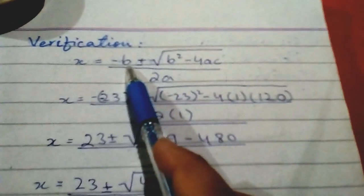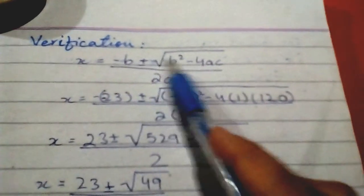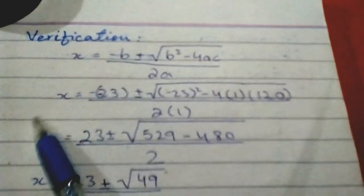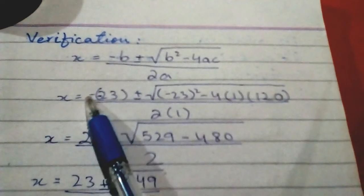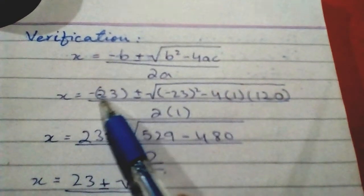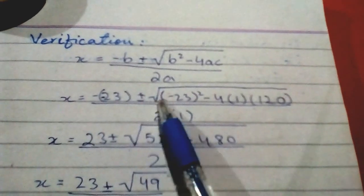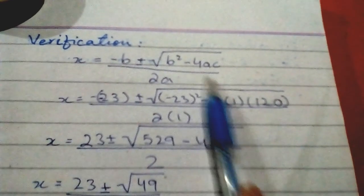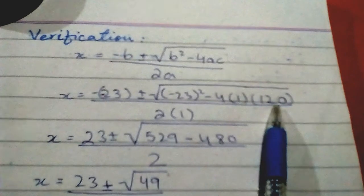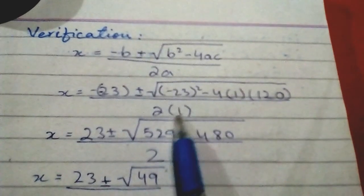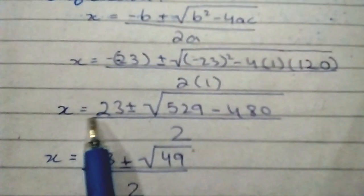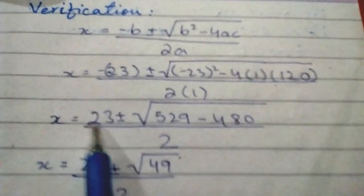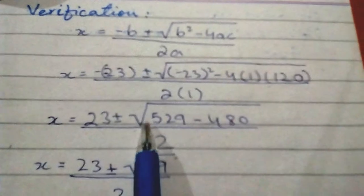Using the quadratic formula: x = (-b ± √(b² - 4ac)) / 2a. So x = -(-23) ± √(discriminant) / 2.